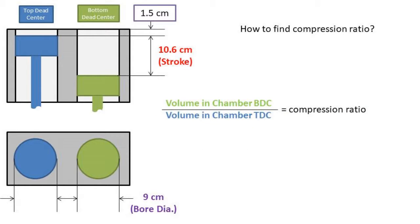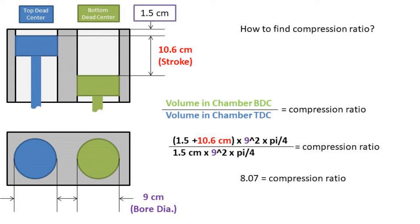Now let's move on to compression ratios. To calculate the compression ratio, you can take the volume of the combustion chamber at bottom dead center and divide by the volume at top dead center. In this example, I am assuming a perfectly cylindrical combustion chamber. In the real world, this would more than likely not be the case. So if we take the volume of the chamber at bottom dead center and divide by the volume at top dead center, we get a compression ratio of 8.07.